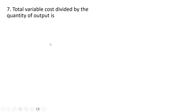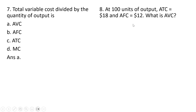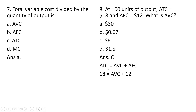Question seven. Total variable cost divided by the quantity of output is average variable cost. Answer choice A. Question eight. At 100 units of output, average total cost is $18 and average fixed cost is $12. What is average variable cost? The key formula is average total cost equals average variable cost plus average fixed cost. So $12 plus average variable cost must equal $18, meaning average variable cost is $6.